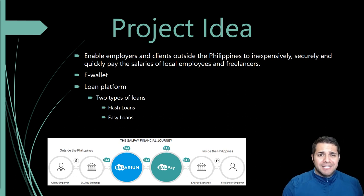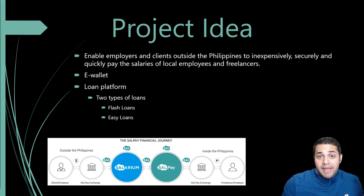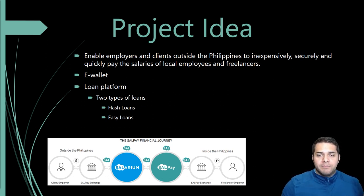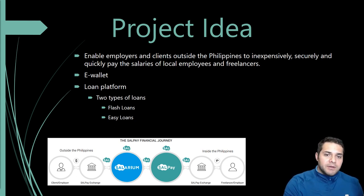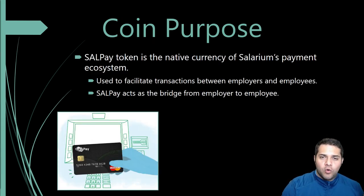They also have easy loans, which is similar to Tinder for loans. An employee asks for how much money, what the purpose is, and how long they want to take to make payments — so X amount of months. A lender will see the loan request and make an offer, and several lenders can compete for it. It's up to the person who requested the loan to accept. Once accepted, Solarium will transfer the money and share the information with the lender and the borrower.